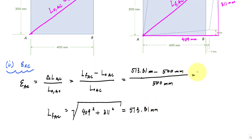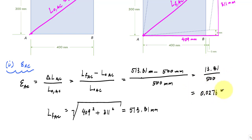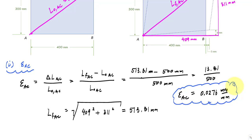The normal strain calculation gives 13.81 millimeters divided by 500, so epsilon AC equals 0.0276 millimeters per millimeter. The positive result means the line elongated — this is a tensile strain. Now let's do another normal strain calculation, this time for BD.